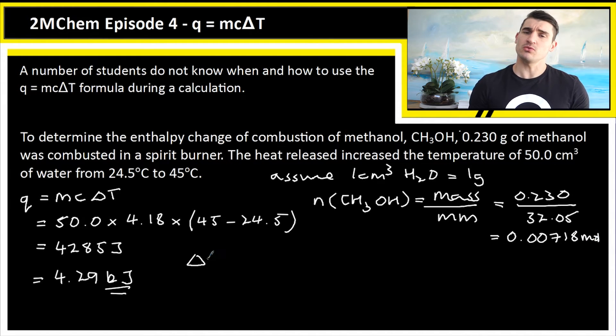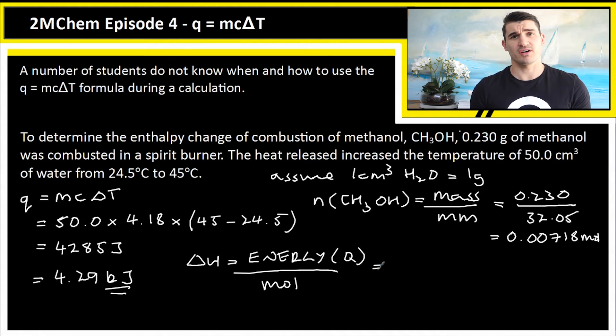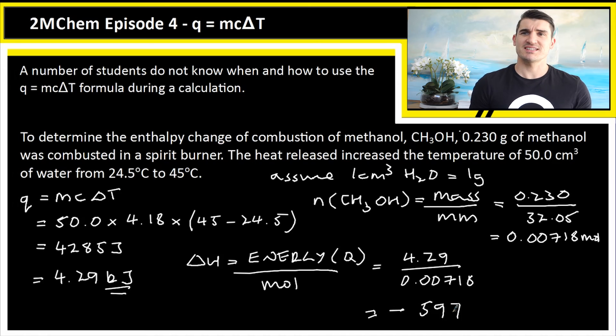So delta H is equal to energy, which in this case is our Q in kilojoules, and then we divide that by our number of moles. We've got our energy which was 4.29 kilojoules. We divide that by the mole which was 7.18 times 10 to the negative 3, and that's going to give us our value for delta H. Now our value for delta H is negative because the temperature has increased, so we've got negative 597 kilojoules per mole. If the temperature went down, we would have a positive enthalpy.